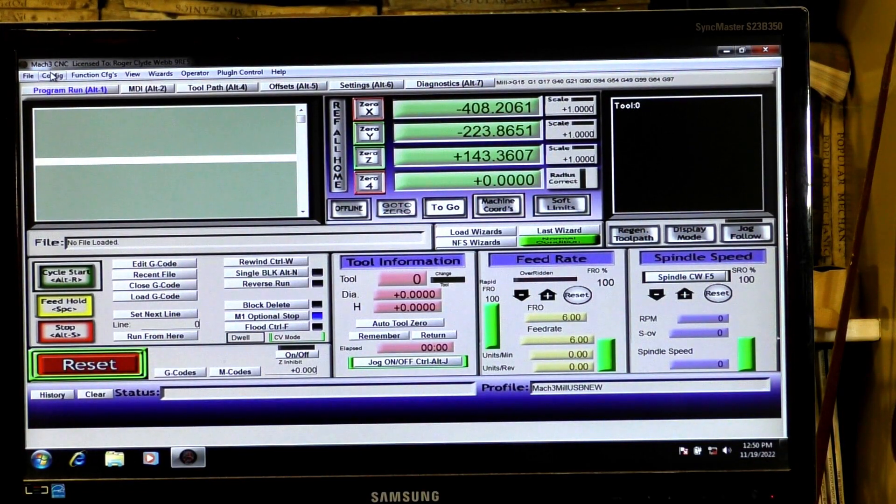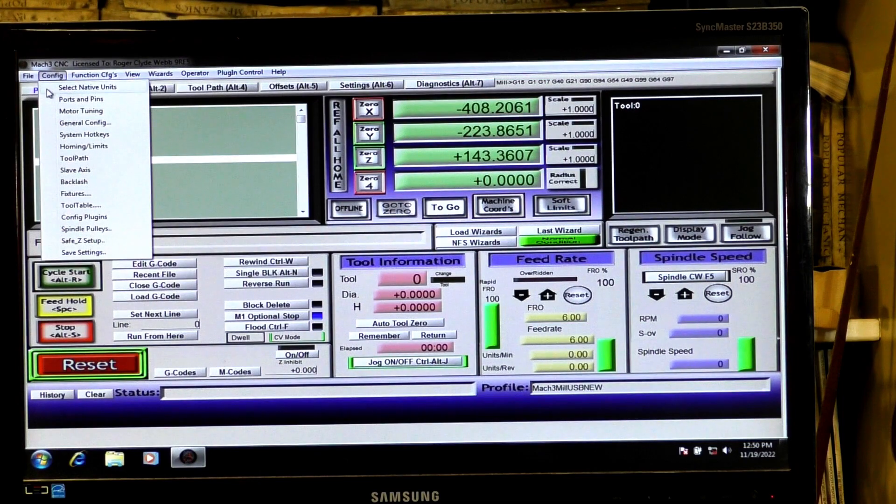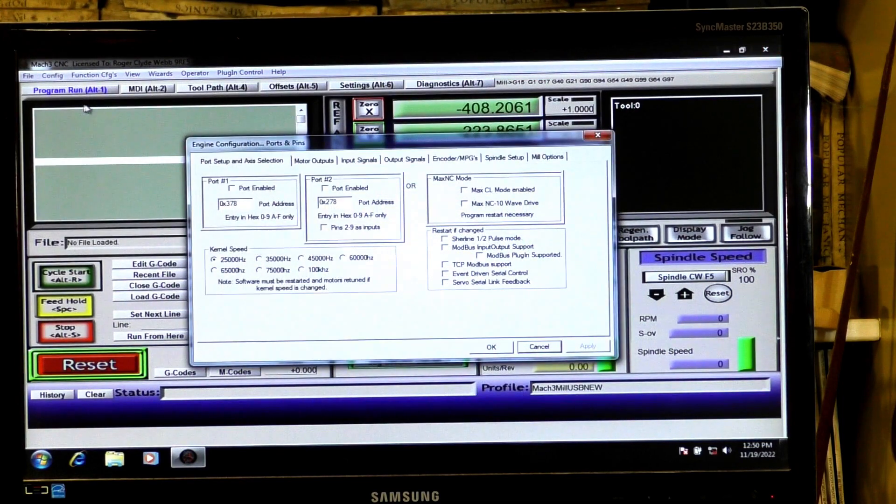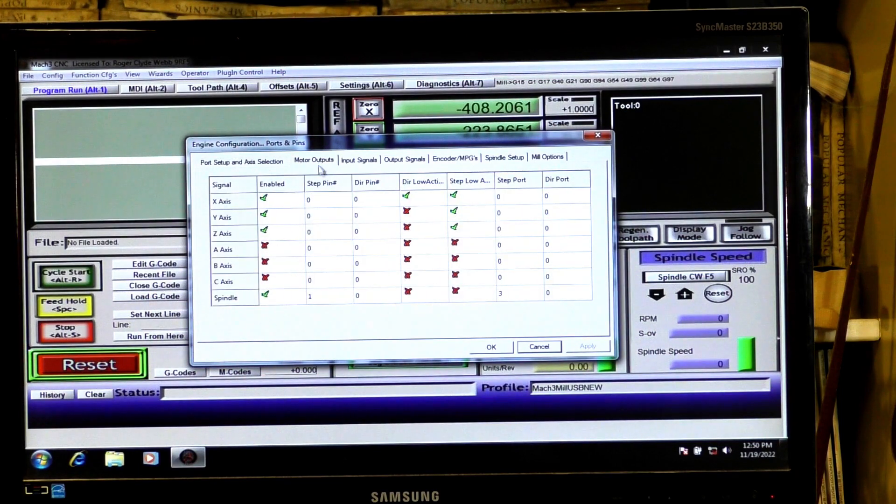OK, so it's up into config, then ports and pins, then motor outputs, and you just come to here, where it says direction low. OK, so you just change it in the X axes, change that to an X, press apply, press OK.